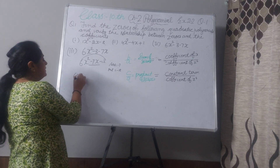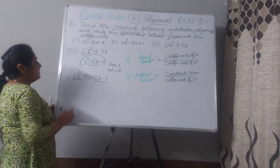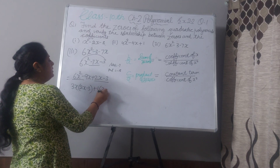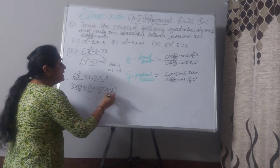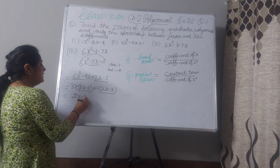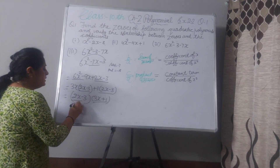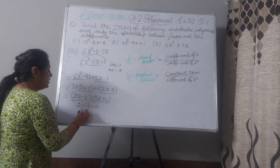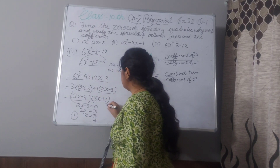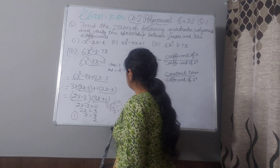Split the middle term as minus 9x plus 2x: 6x² minus 9x plus 2x minus 3. Make pairs. Take 3x as common — giving 2x minus 3. Take 1 as common — giving 2x minus 3. Now 2x minus 3 is common to both. Take 2x minus 3 outside — internally 3x plus 1 is left. So we get (2x minus 3)(3x plus 1). Either 2x minus 3 equals 0 gives x equals 3/2, or 3x plus 1 equals 0 gives x equals minus 1/3.